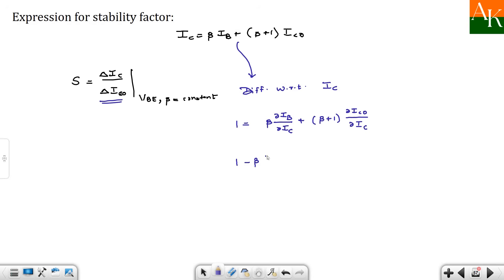So this is equal to 1 plus beta delta IB by delta IC and this is equal to 1 plus beta ICO by delta IC. So what you will have, 1 minus beta delta IB by delta IC divided by